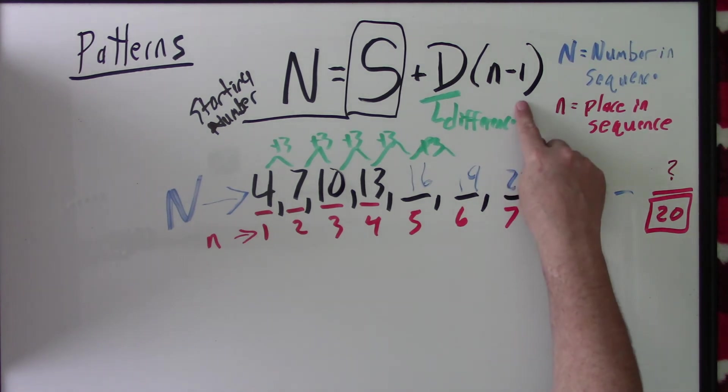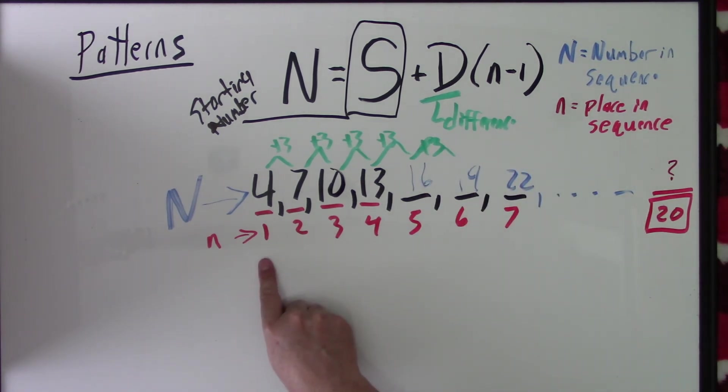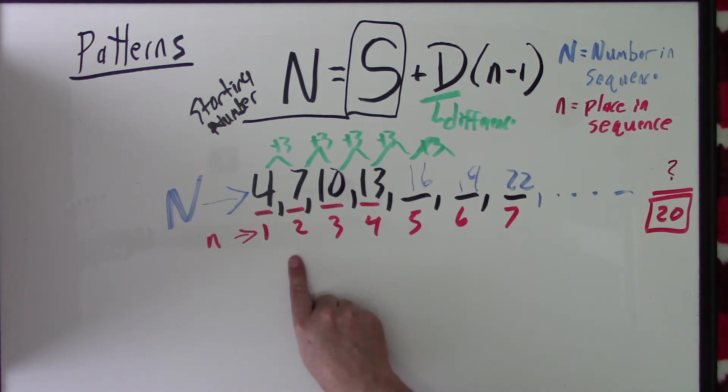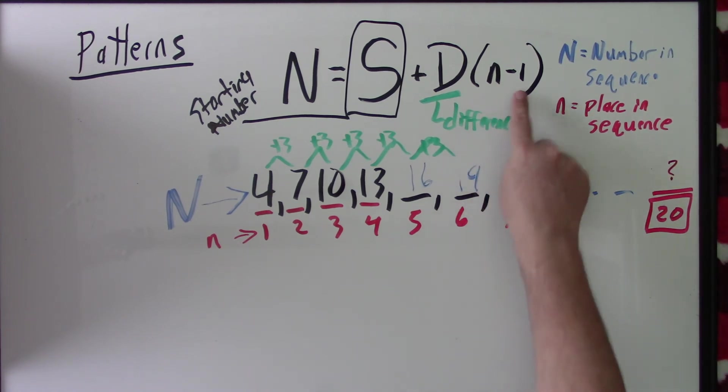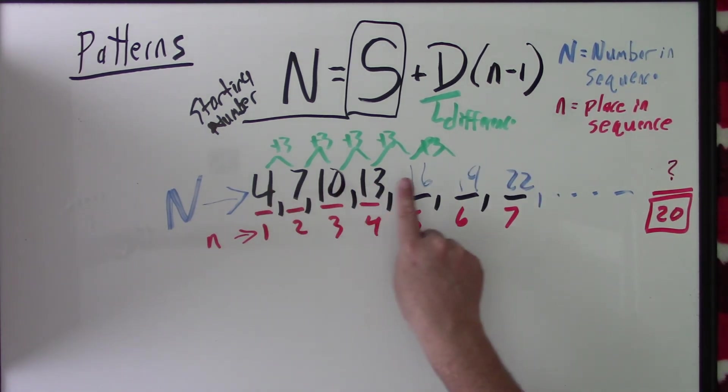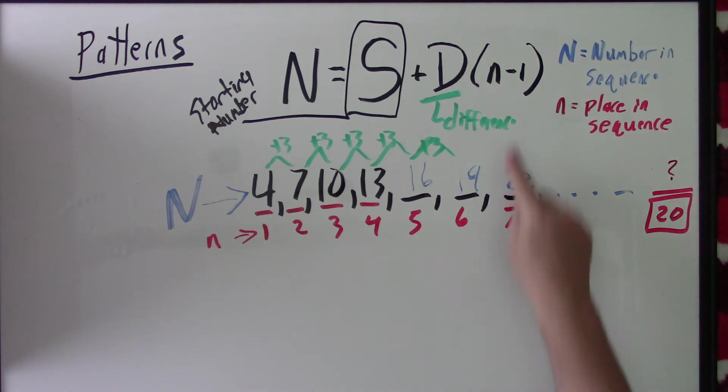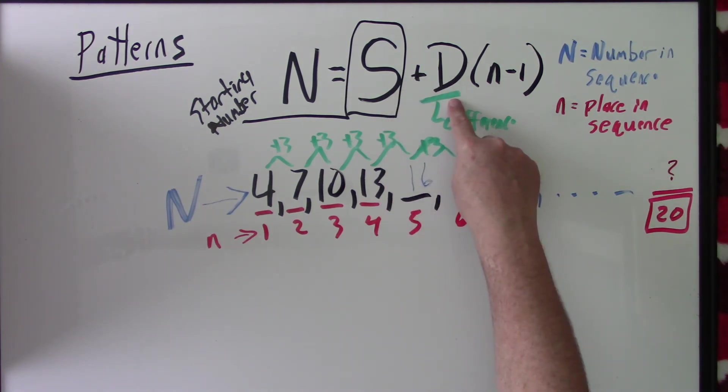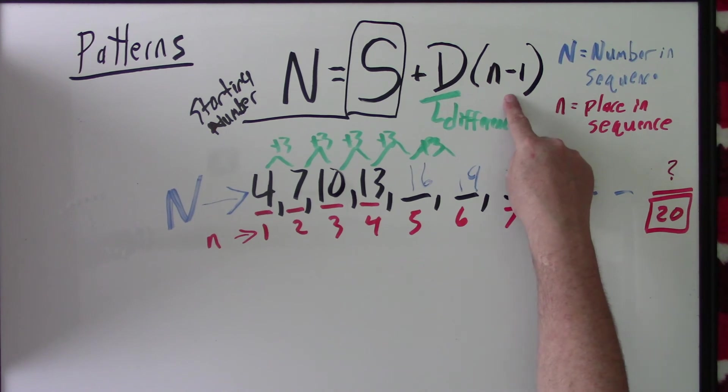So, why is it n minus 1? Well, I haven't added 3 here. I've only added 3 at the second number. So, if I put 2 in here, 2 minus 1 is 1, 3 that I've added. So, at the fifth number, 5 minus 1 is 4. I've added 1, 2, 3, 4 threes. So, that's why this is n minus 1, is because we don't add 3 for the initial number. We start adding 3 at the second number. So, we're starting at a certain number. We're adding something to it over and over again. And this is how many we're adding to it.